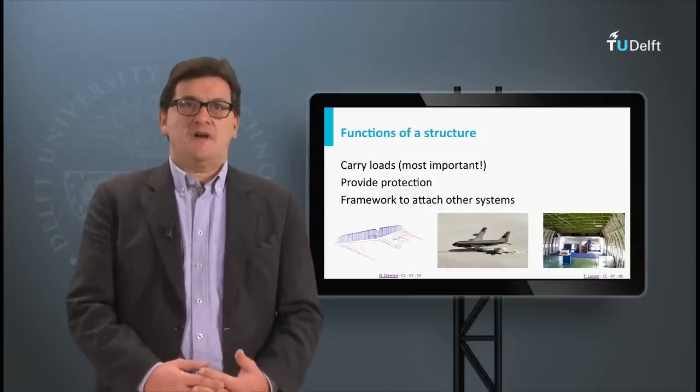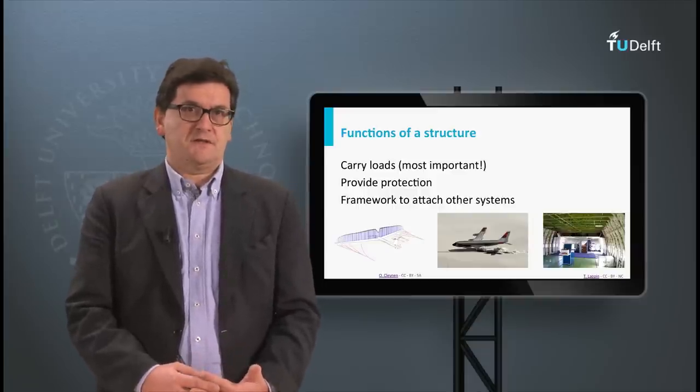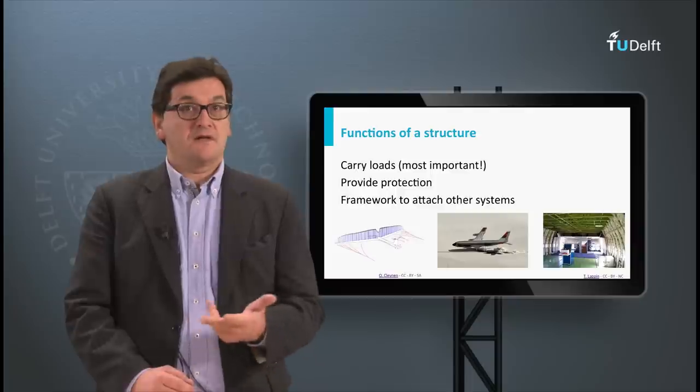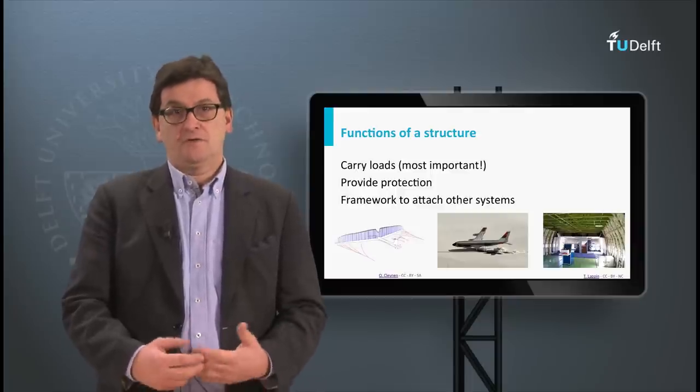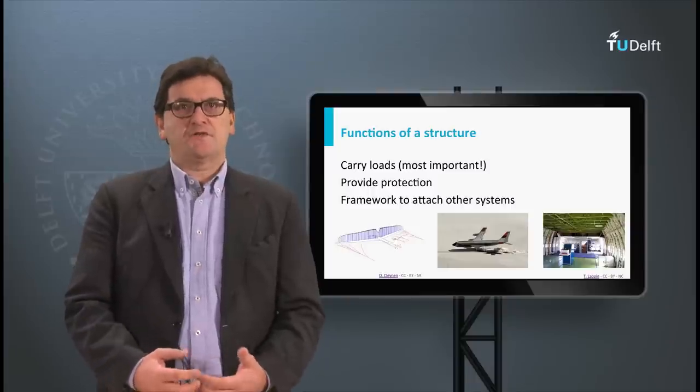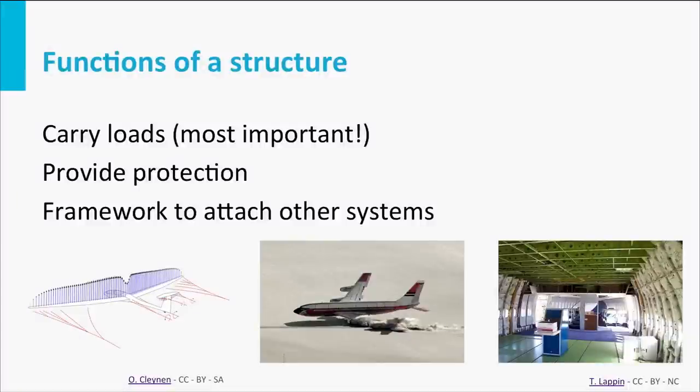Aircraft also have a structure, with the same functions. Their structures carry the loads, protect the payload, and serve as a framework to attach other systems to. This is illustrated in the pictures below. The picture on the left shows a glider with the lift distribution acting on the wing. The structural elements in that wing will carry these loads and pass them on to the centre of gravity of the plane to make equilibrium.